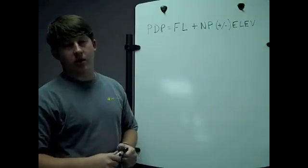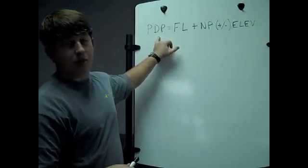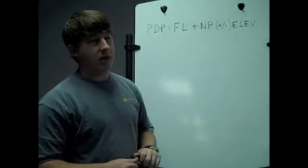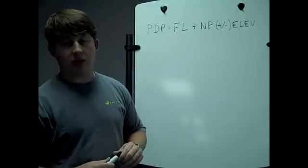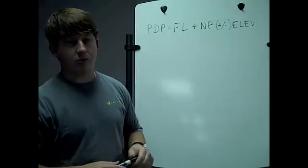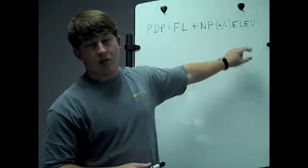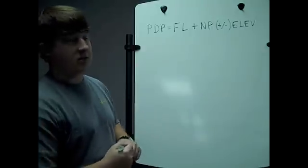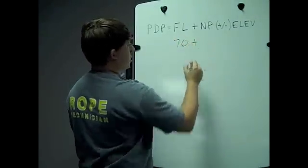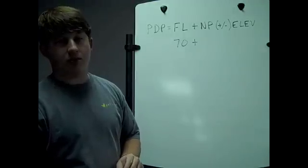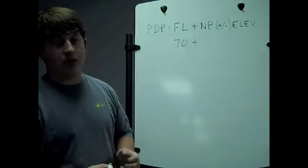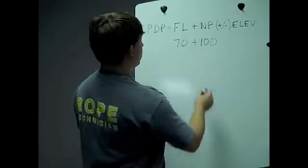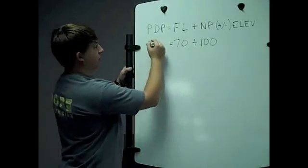Now that we've determined the friction loss in the hose, we use the pump discharge pressure formula to find what pressure we need to pump at the pump panel for that hose line. We also need to know the nozzle pressure — 100 PSI for fog nozzles, and typically 50 PSI for a smooth bore hand line. We also need to know any elevation gain or loss. For this problem, we have no elevation. Our friction loss is 70 PSI, nozzle pressure is 100 PSI, and no elevation, so our pump discharge pressure is 170 PSI.